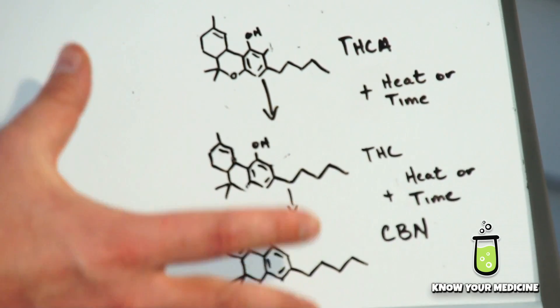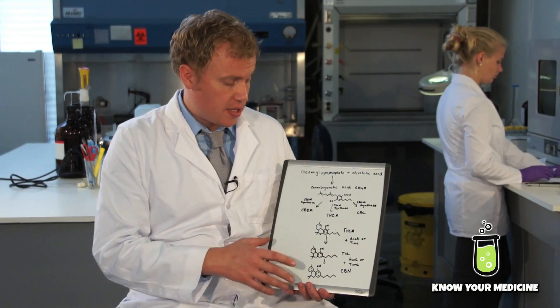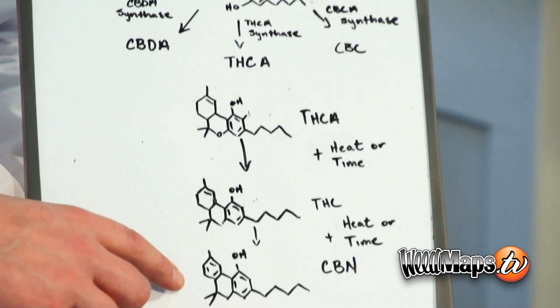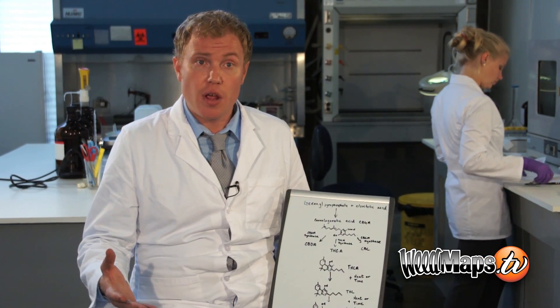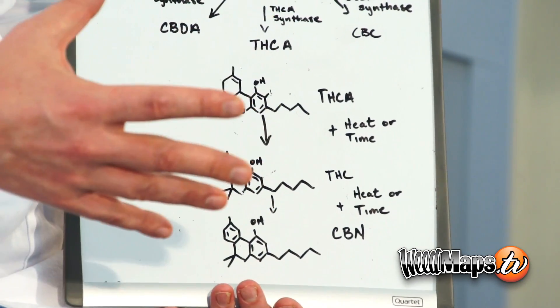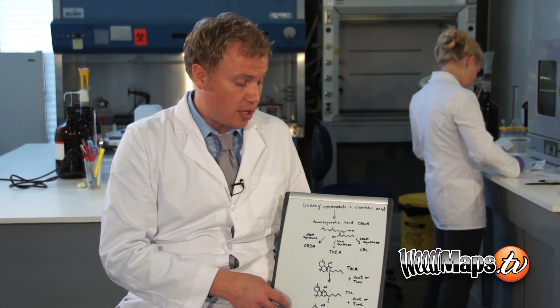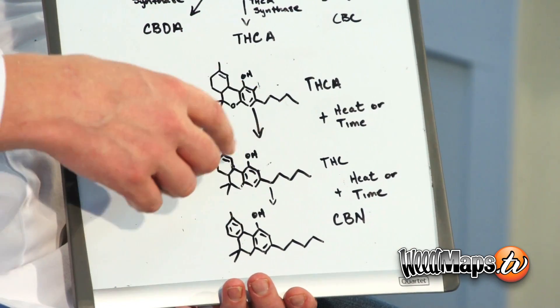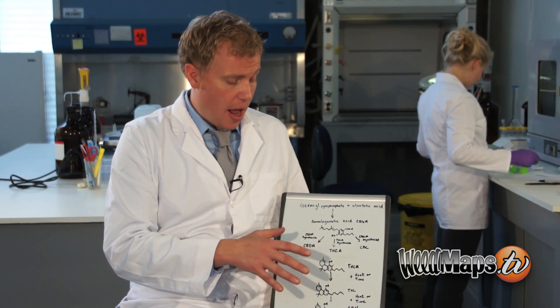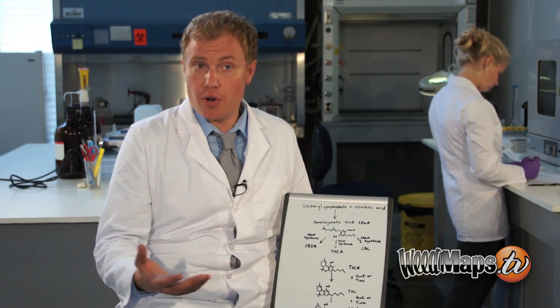We use the HPLC because it doesn't degrade compounds the way the GC does. The GC uses heat, so it degrades some compounds, whereas the HPLC can test them in their natural state. CBN is formed by either heat or time, and at about 140 degrees Celsius we start to see a conversion of THC to CBN, where GCs must operate at much higher temperatures. So when you test with the GC, you're going to see slightly lower CBD numbers because CBD with heat can be converted to THC, and then the THC can be converted to CBN — resulting in higher CBN numbers than you would see with HPLC testing.